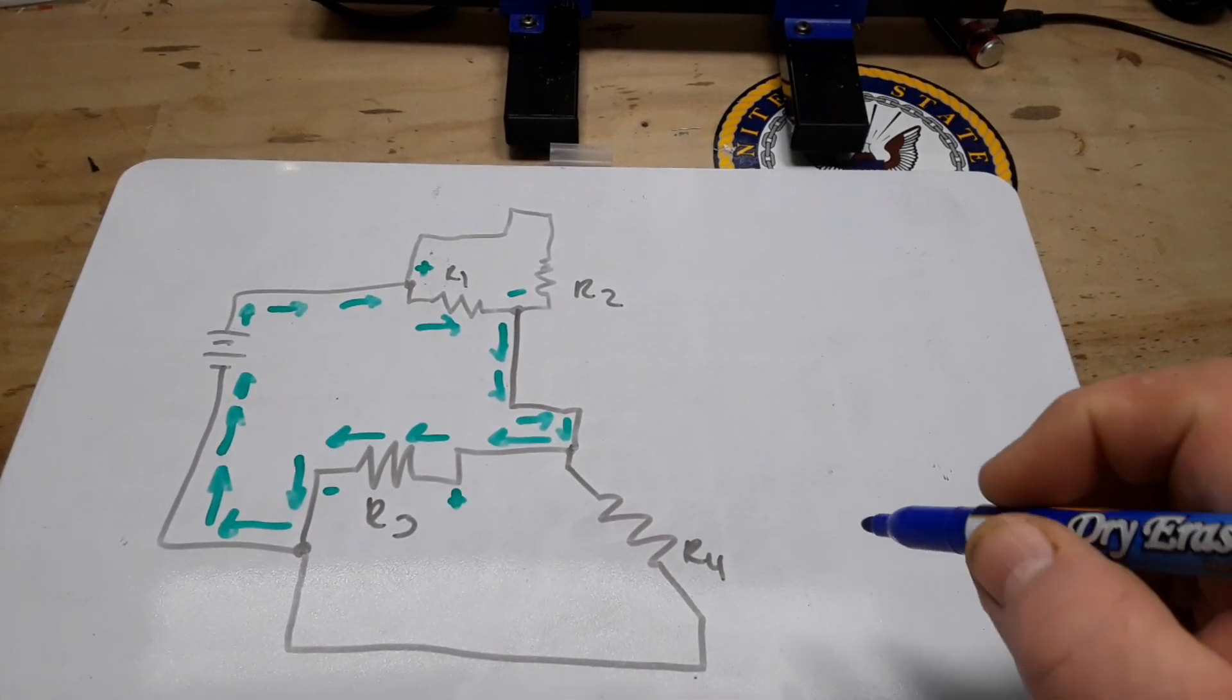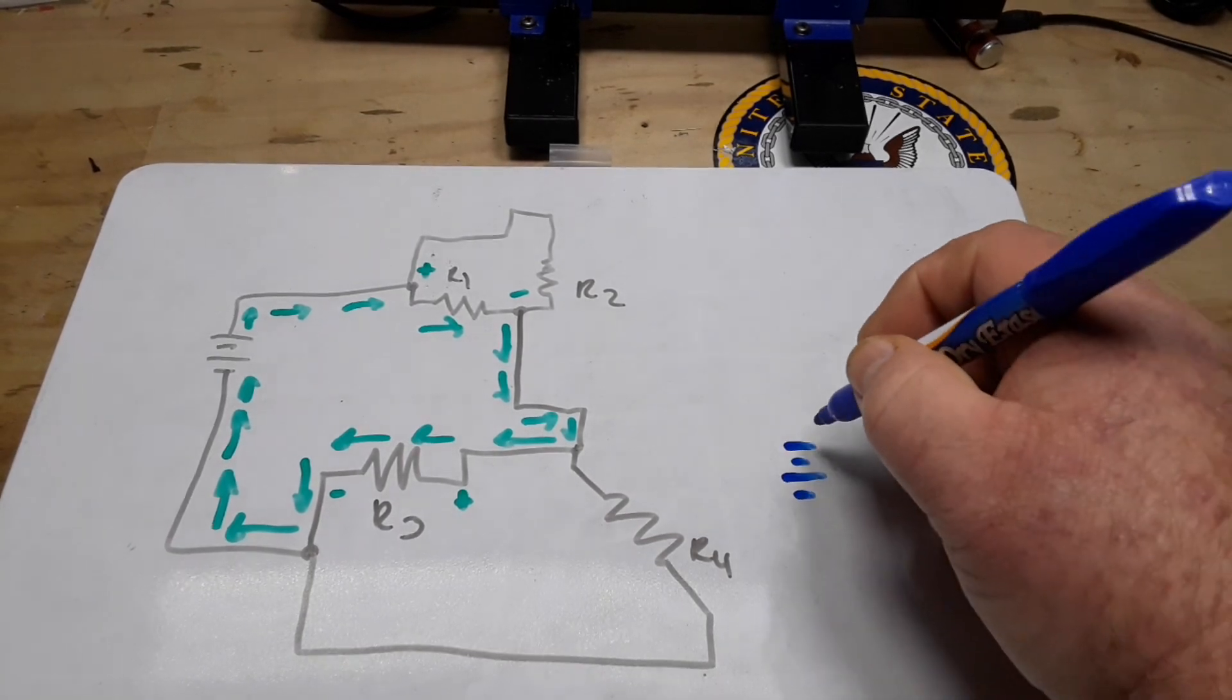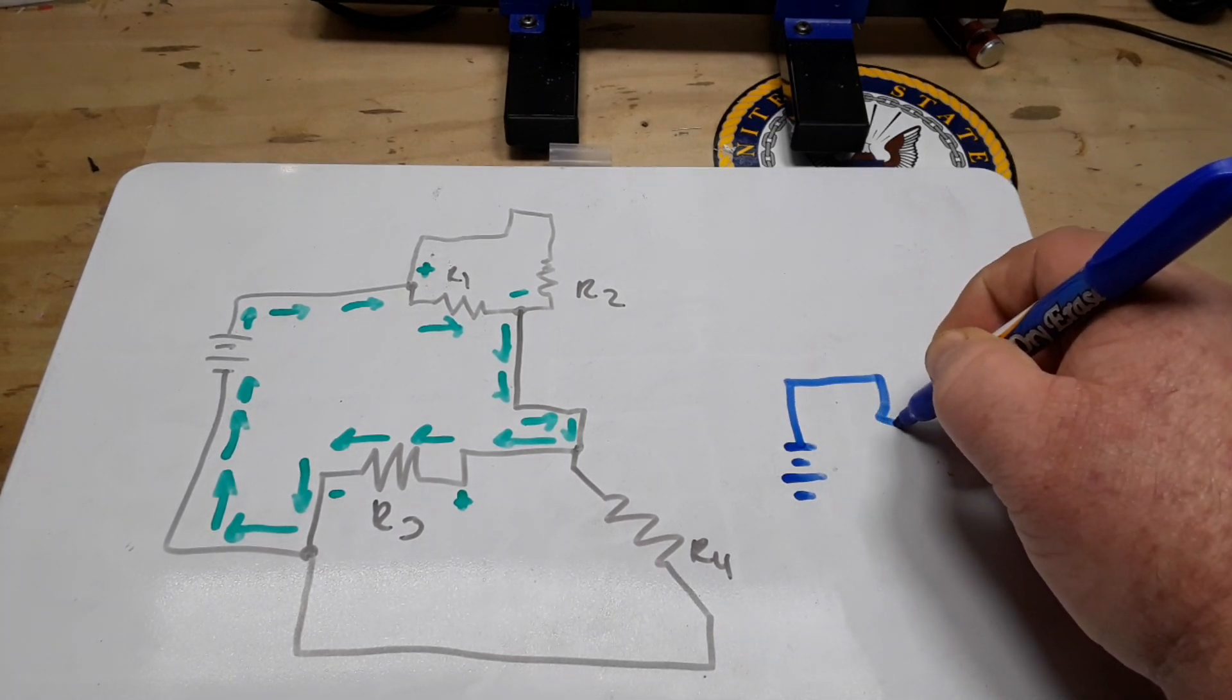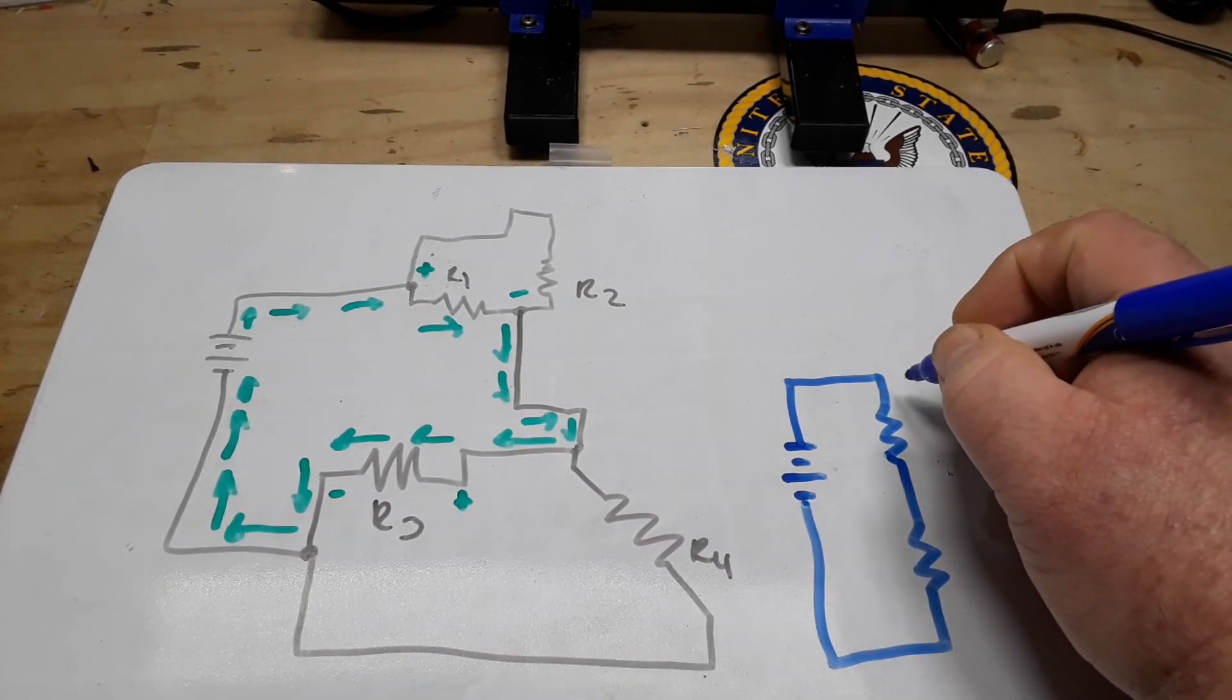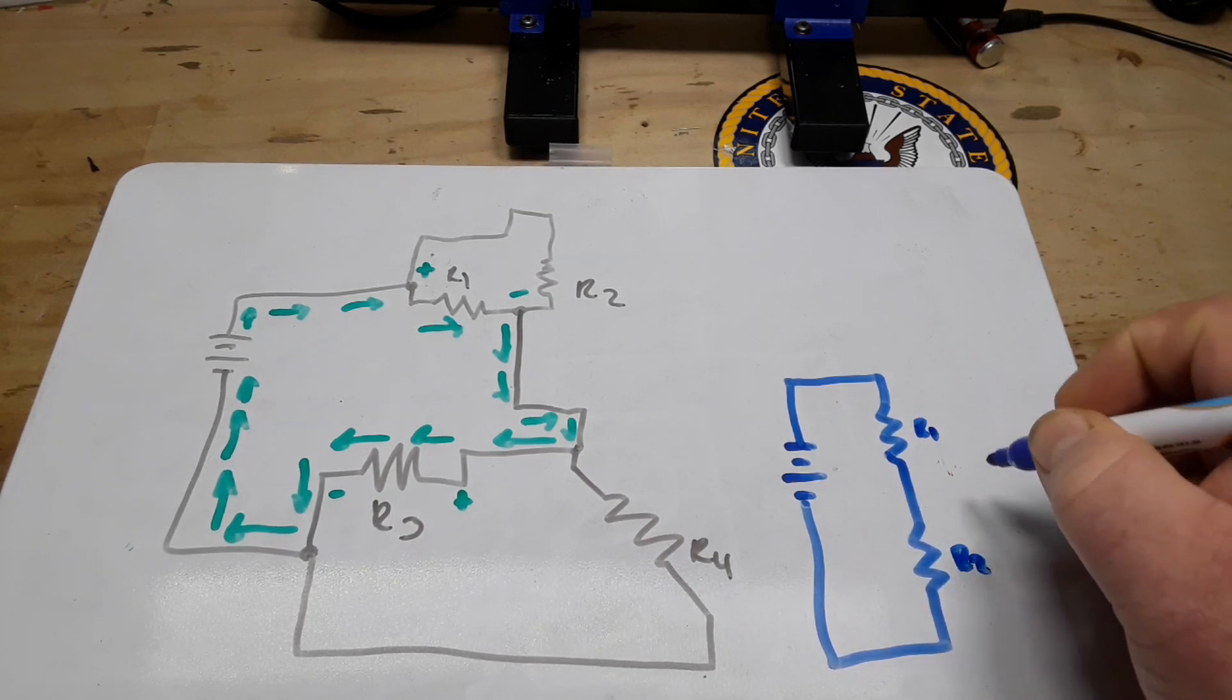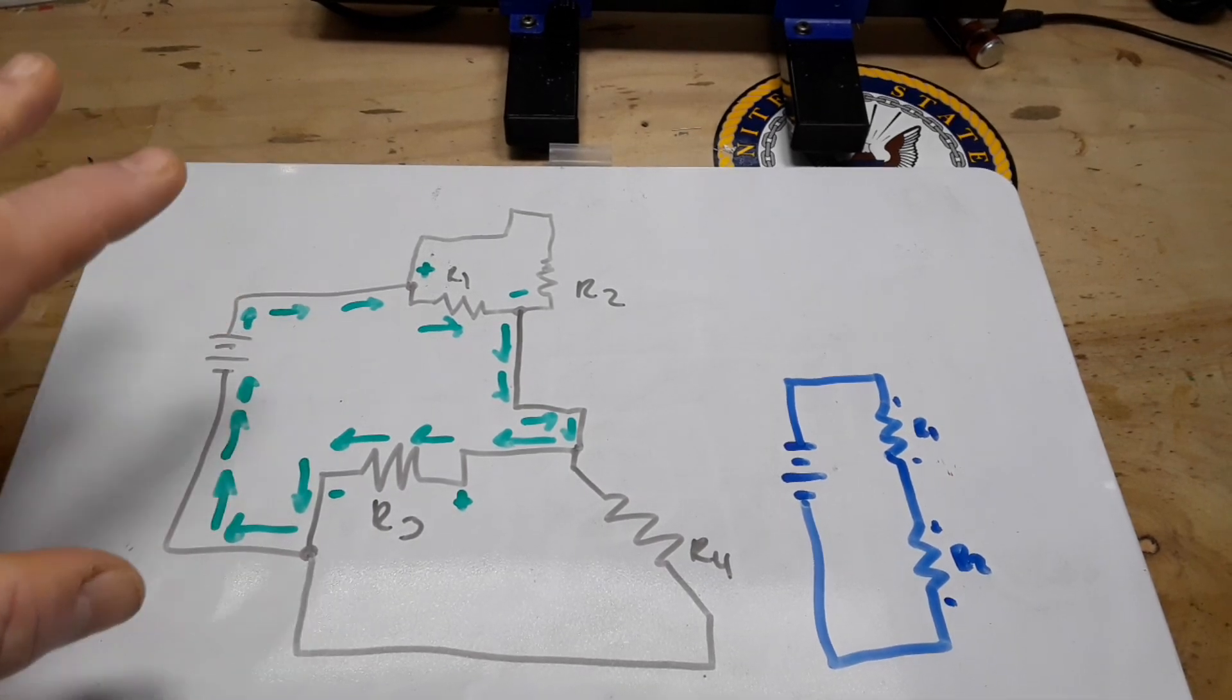So let's grab another marker and kind of redraw what we just saw here. So we have our battery, R1, and R2. That's R1, that's R2, positive negative, positive negative. So that's what we've taken out of that so far.